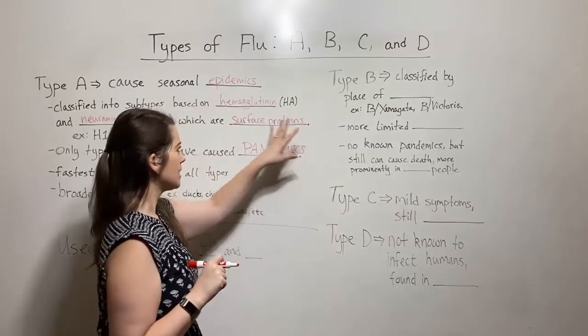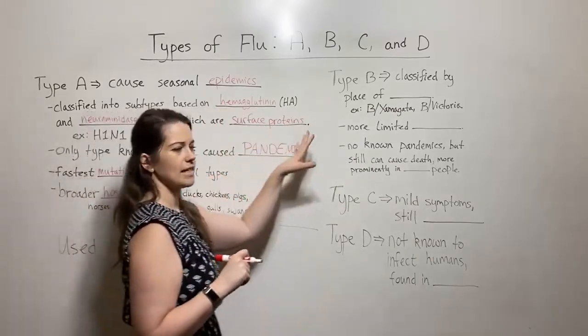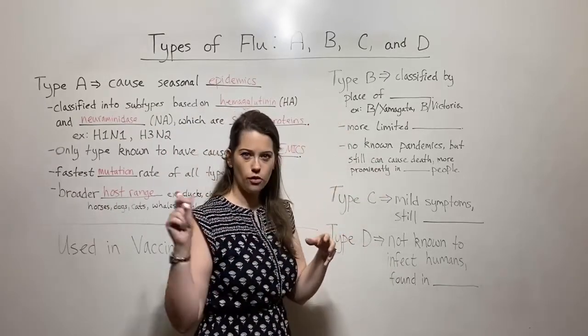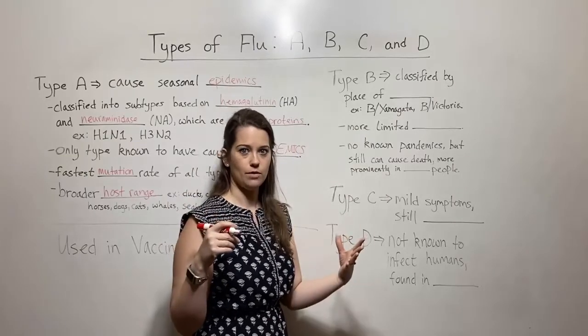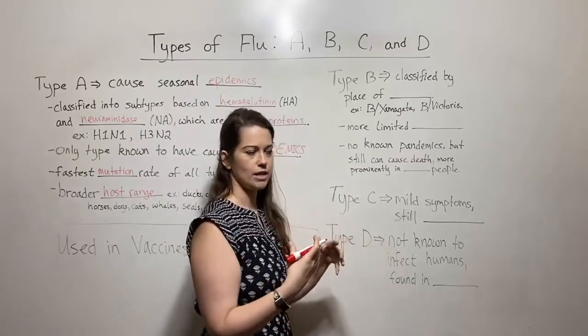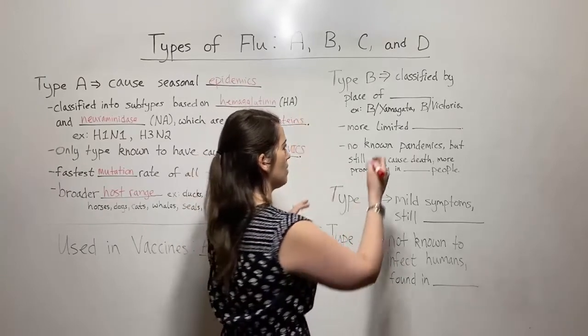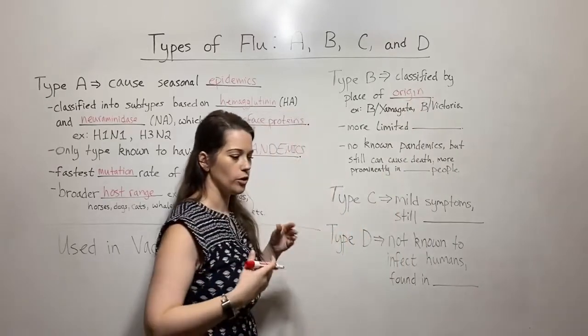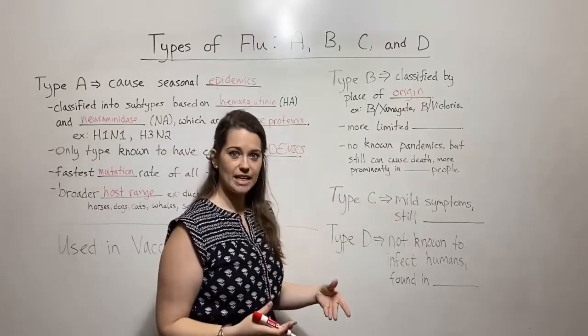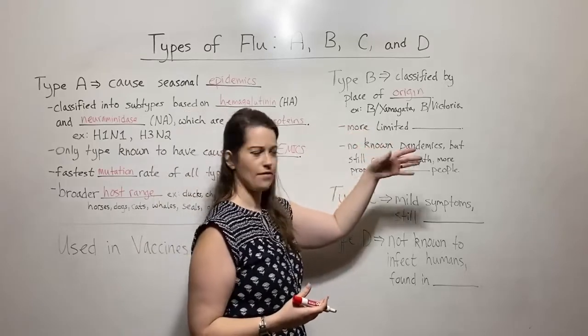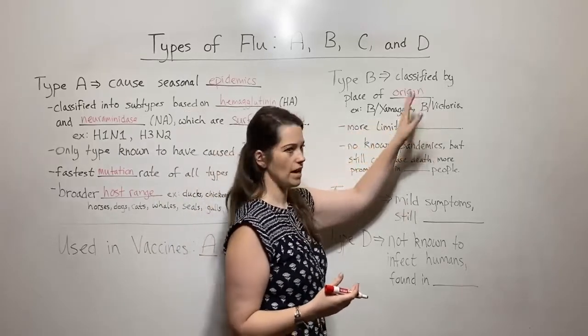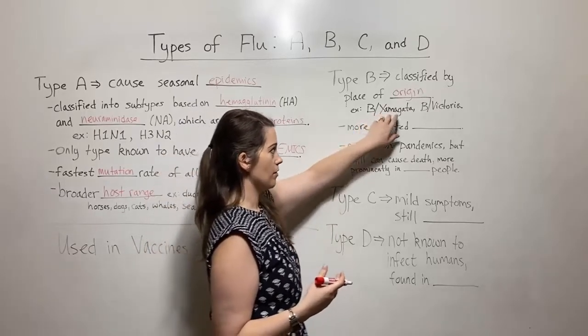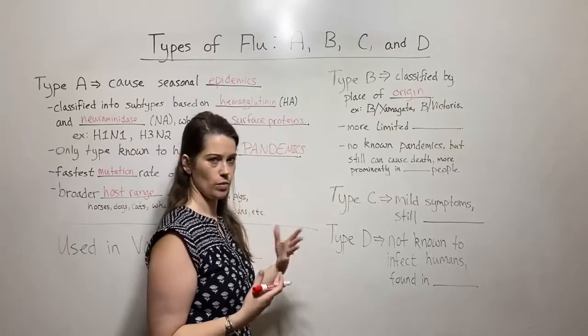Type B still certainly has the hemagglutinin and the neuraminidase, but it's classified differently. Type B has diverged from type A just through the process of evolution. So it's a different but related strain of a virus, and it's classified based on a place of origin. So the different flu B lineages are named for geographic areas. So like Yamagata or Victoria, these are ones that are circulating in the population now. And so they're named after the place where they were first detected or where they originated.